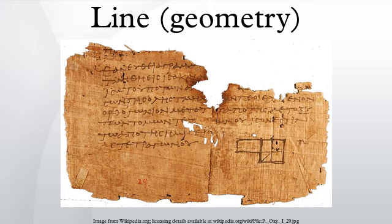Geodesics: the straightness of a line, interpreted as the property that the distance along the line between any two of its points is minimized, can be generalized and leads to the concept of geodesics in metric spaces. See also: line segment, curve, locus, distance from a point to a line, distance between two lines, affine function, distance, and plane.